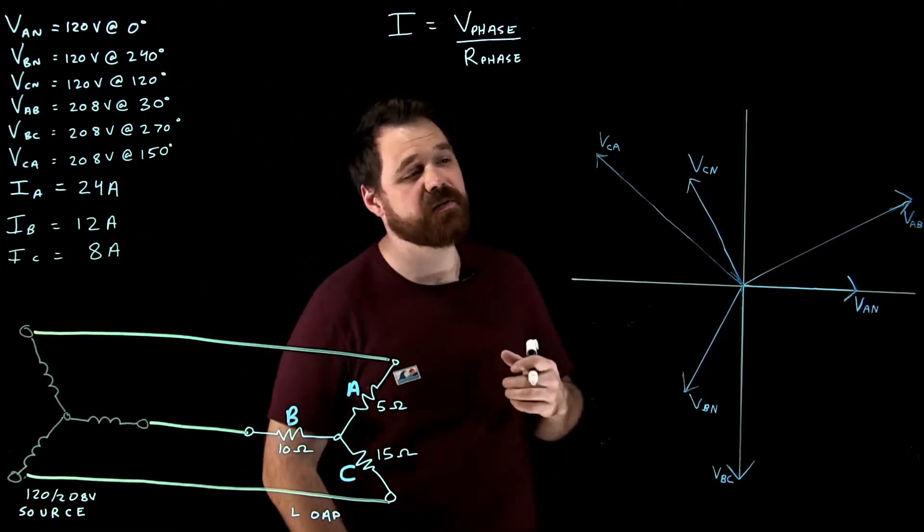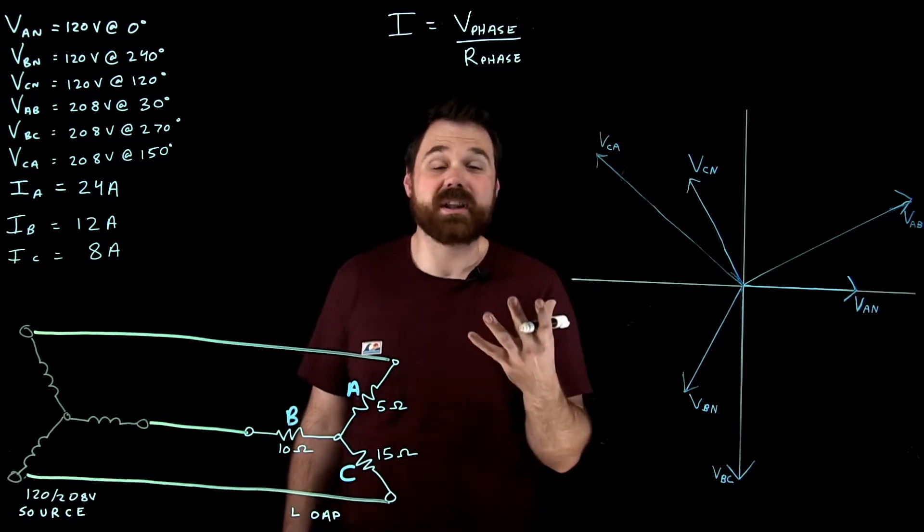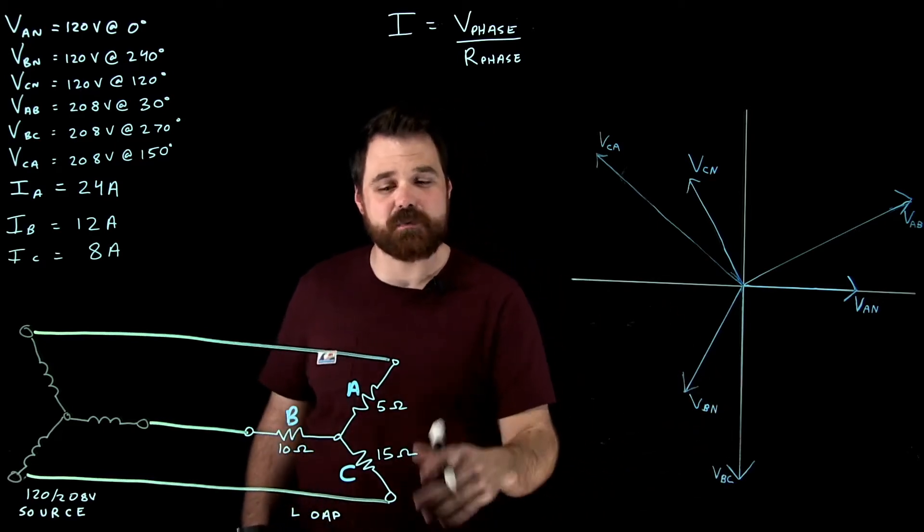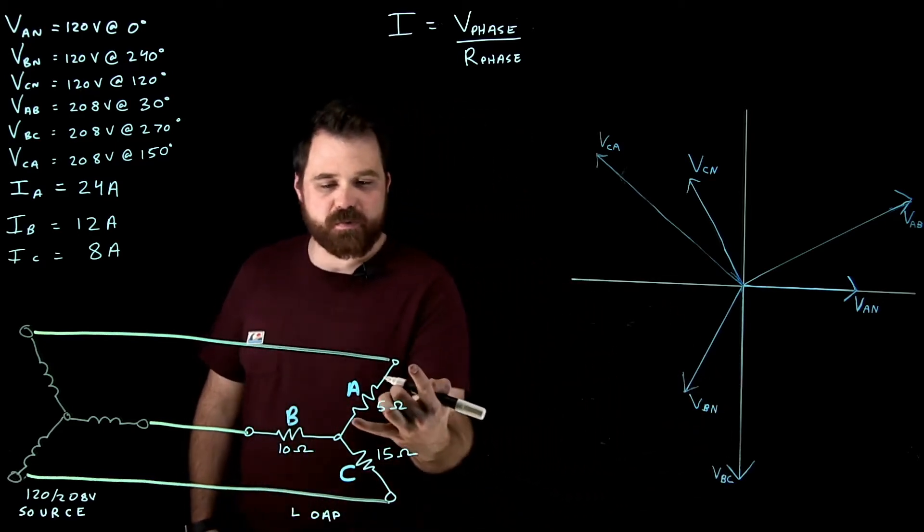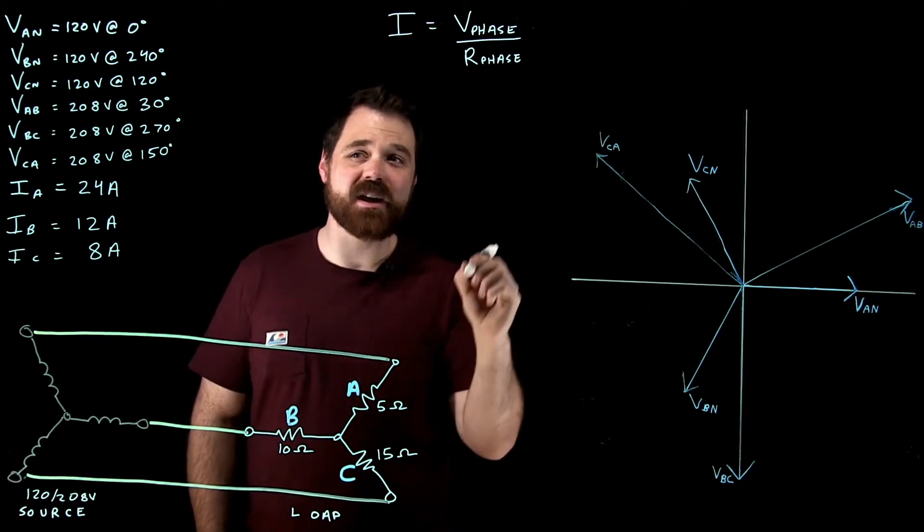So I figured out my current in each phase. Now the trick is to figure out where and what is the relationship between the current and the voltage in each phase. So let's jump back to phase A. Okay, so with a resistor, we know that current is in phase with the voltage.